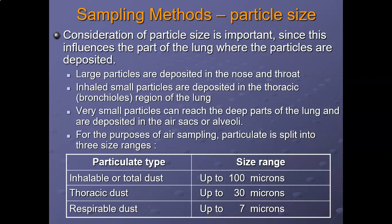Thoracic dust — smaller particles of about 10 to 30 microns — will settle in the thoracic region. Particles in the range of around 0.5 to 7 microns are termed respirable dust. This is important for sampling because based on particle size you need to use a different filter to capture the average contribution of dust a worker is breathing over an eight-hour period.